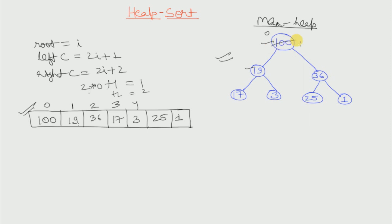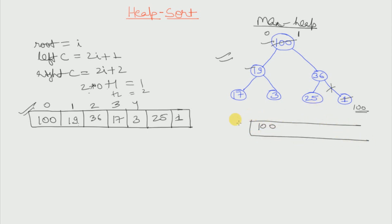Let us just replace this 100 with 1. So here it will be 100 and here it will be 1. We will delink this and store 100 in a separate result array. So our result array is storing first of all only 100. This is the result array, and this is our input, that means the max heap.